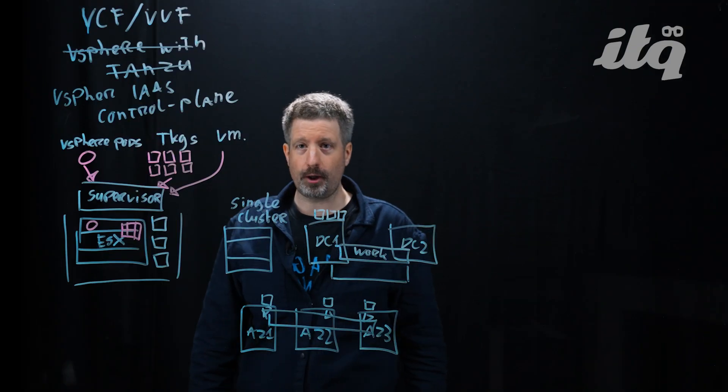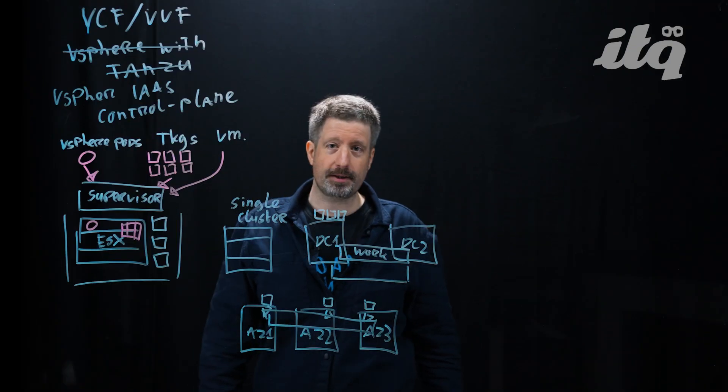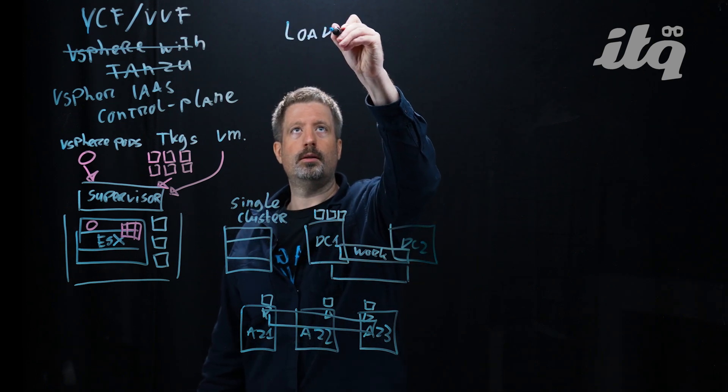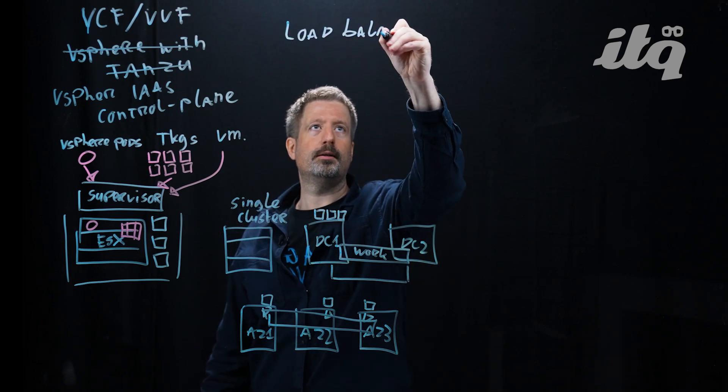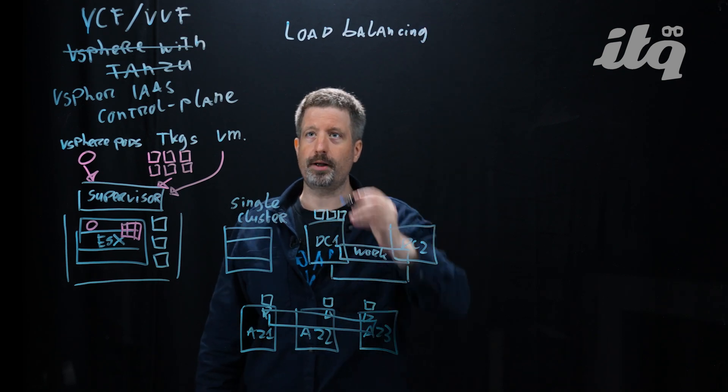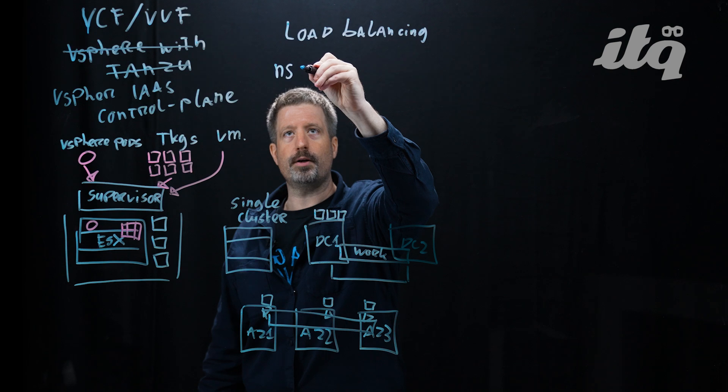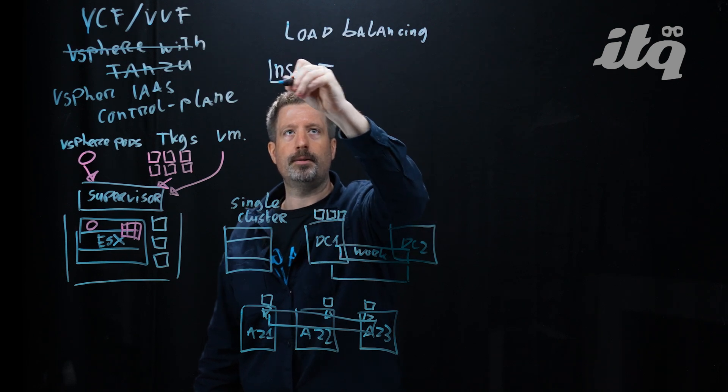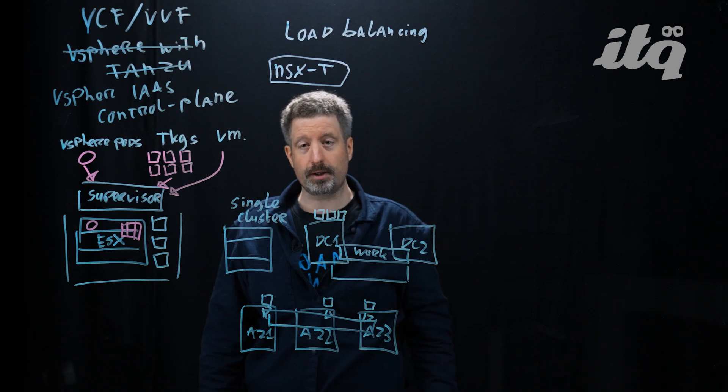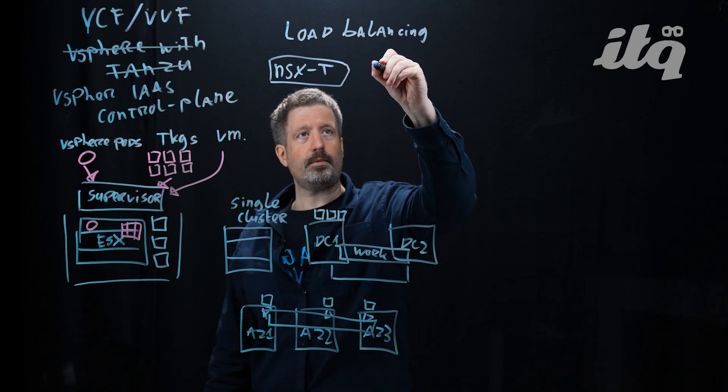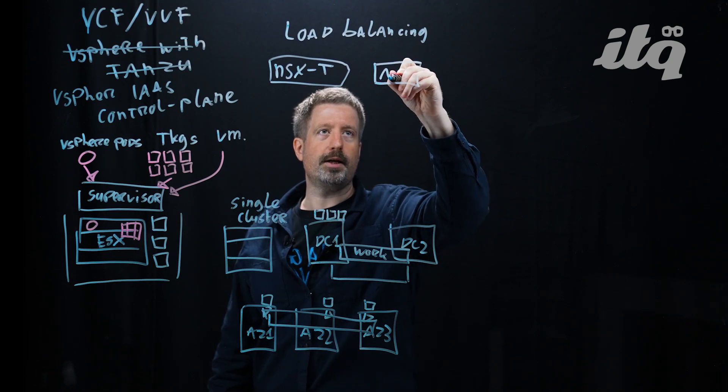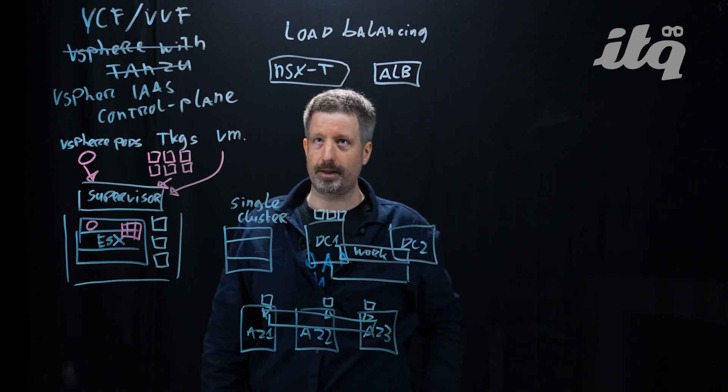When running Kubernetes, load balancing is very important. Kubernetes is, after all, a distributed architecture. For load balancing, there are two integration options that are supported with the ES control plane. If you are already running NSX-T, then the ES control plane can leverage NSX-T for many network services, including load balancing. But there's also the option to integrate with the advanced load balancer, formerly known as the AVI load balancer.